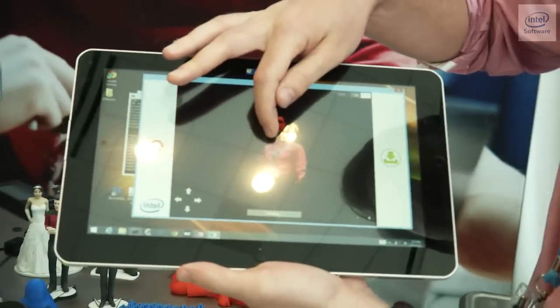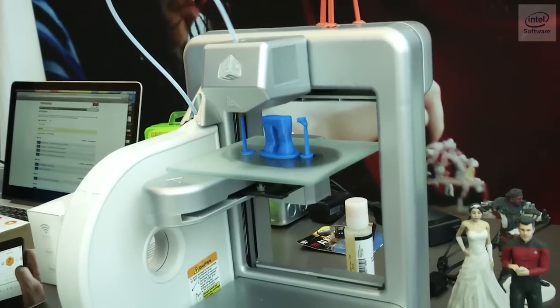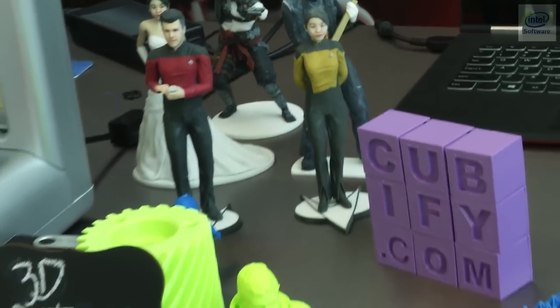And what we're showing here is a process that we like to call scan, edit, and share. Because this tablet has a 3D camera in it you can actually use it to scan small objects which I've done of myself right here. And then we can actually use a 3D printer to take the virtual world, make it physical and share it with our friends. And this is all powered by Intel RealSense 3D camera for tablets and 3D Systems 3D printing technology.